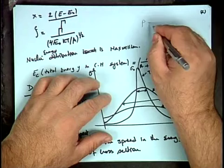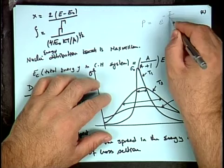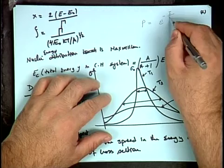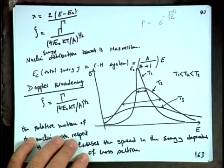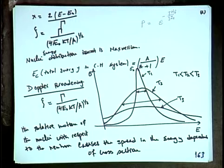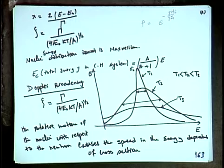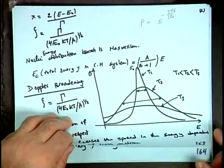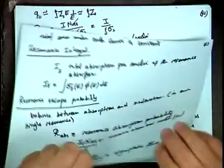We needed to calculate the resonance integral I because it is a key component in calculating the resonance escape probability p = exp(−I × N_fuel / (ξ_c × σ_s)), where N_fuel is the number density of the fuel and ξ_c × σ_s is the slowing-down power of the moderator. Calculating I allows us to find p, which is essential for computing K_eff.